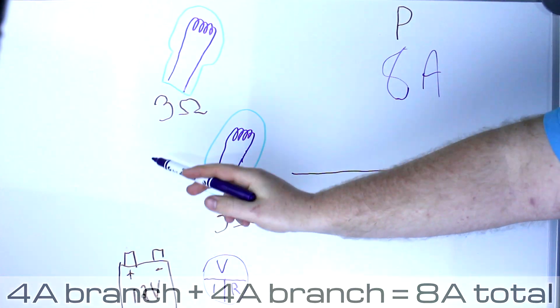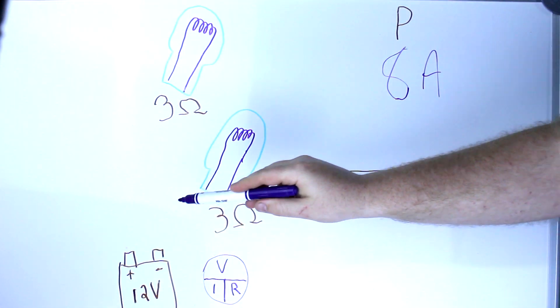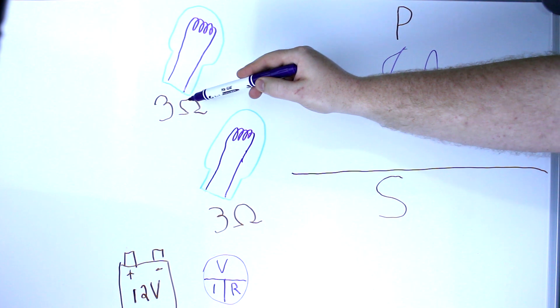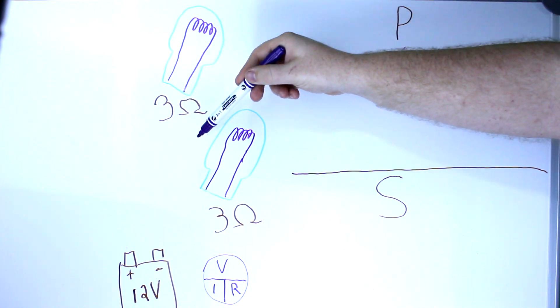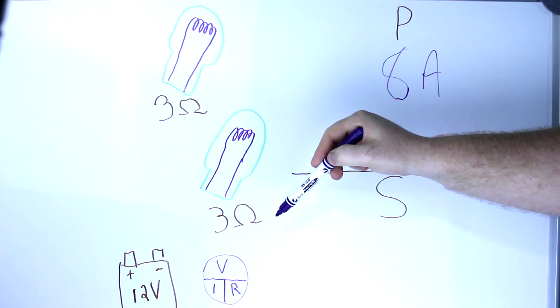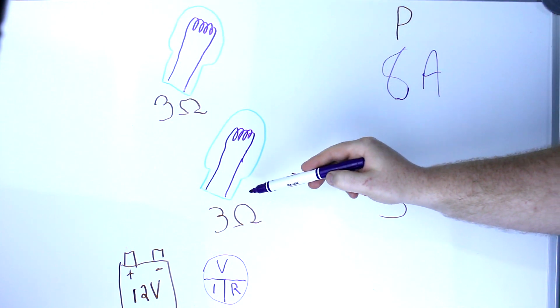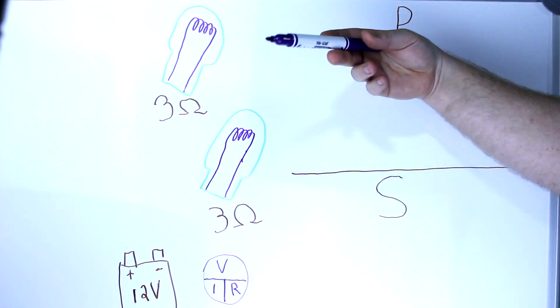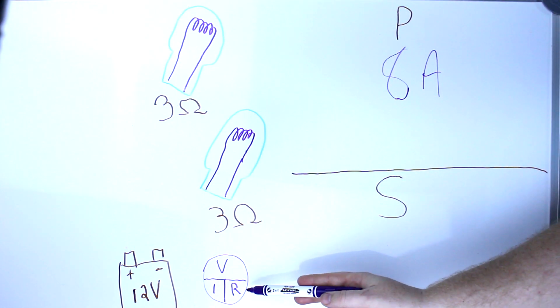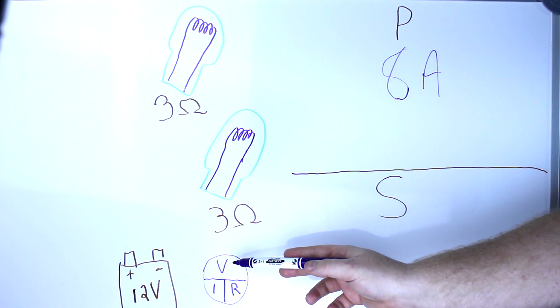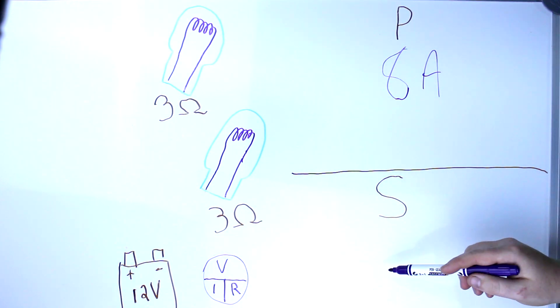Now what about in series? With series, you add these two together because you're meeting a resistor here, so 3 ohms of resistance, then you continue on, 3 more ohms of resistance. You're dealing with, in total on that circuit, 6 ohms of resistance. So resistance is 6, voltage is 12, you end up with 2 amps.